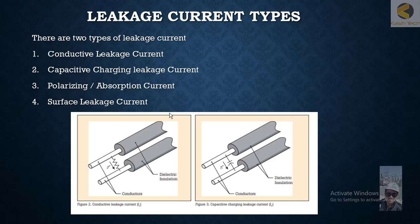The third type is the polarizing absorption current. Whenever DC voltage is applied, the molecules align themselves in the direction of the positive and negative poles respectively, causing a flow of charge in the conductor. This flow of charge is a kind of displacement current and is called the polarizing current, which is also added to the leakage current. These second and third types will be discussed separately in detail.